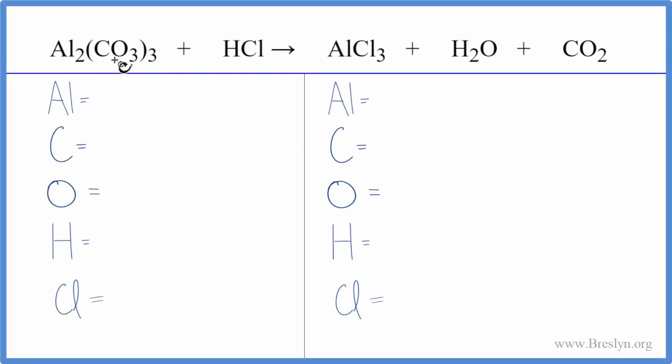In this equation, we have aluminum carbonate plus hydrochloric acid. So to balance it, let's count the atoms up on each side of the equation. Let's be very careful with this one.